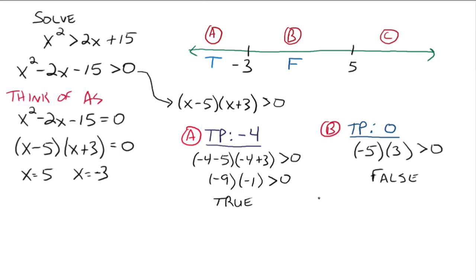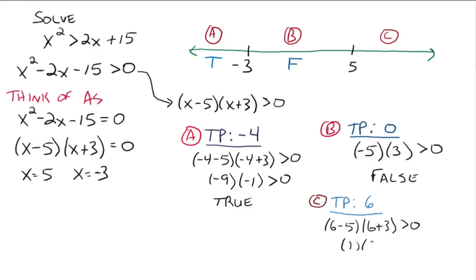Then region C — we want any number to the right of 5, so we take 6. Plugging 6 in for x: 6 minus 5 times 6 plus 3 greater than 0, which gives 1 times 9, which is greater than 0. That is true. So region C is true.